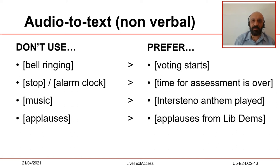However, the subtitler may not have captions ready at hand. In preparation of the event to subtitle, we suggest that the subtitler or the editor drafts a list of possible captions that could be used while subtitling the event. We suggest using expressions that clearly state something that the audience can immediately understand, like [voting starts] when the bell announcing the start of the voting session rings, instead of the ambiguous [bell] or [bell ringing]. The same is true for the caption [time for assessment is over], to tell a deaf student he or she has no more time to dedicate to writing his or her assessment, instead of [stop] or [teacher activated alarm clock].